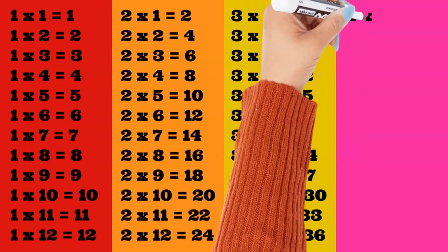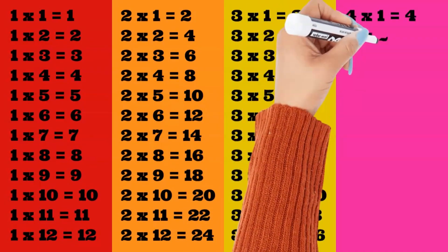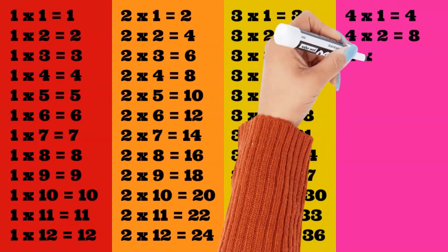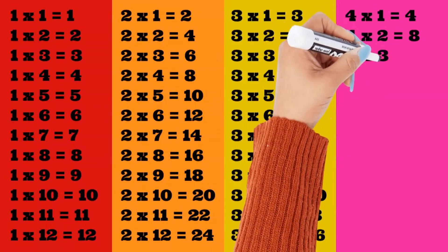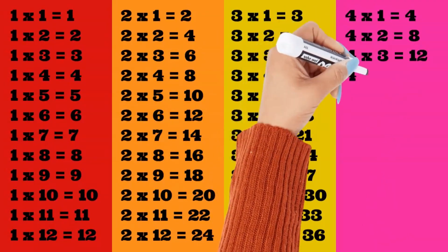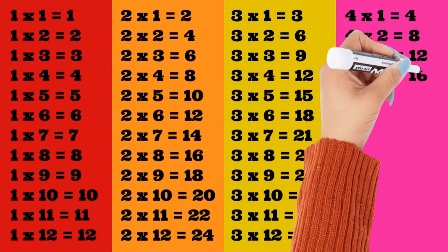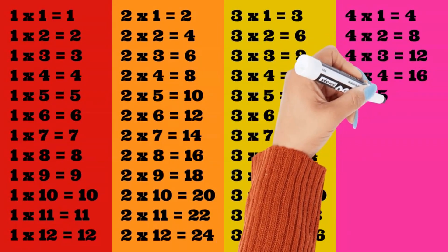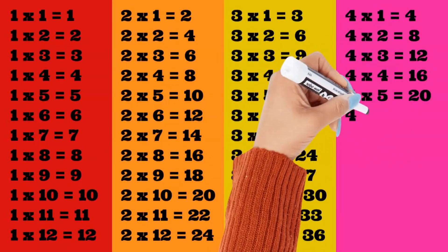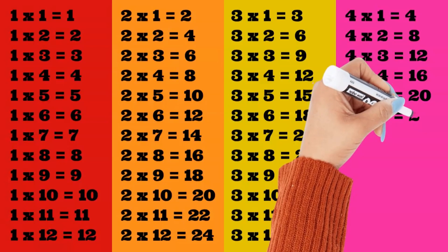4 times 1 is equal to 4. 4 times 2 is equal to 8. 4 times 3 is equal to 12. 4 times 4 is equal to 16. 4 times 5 is equal to 20. 4 times 6 is equal to 24.